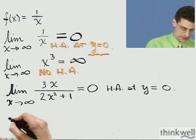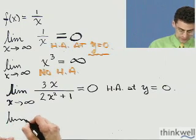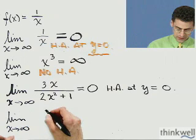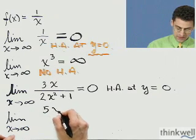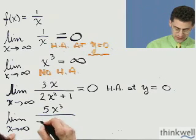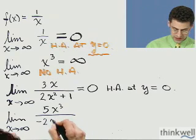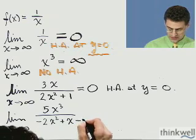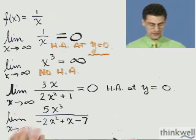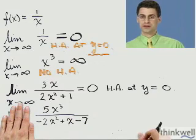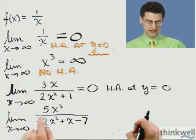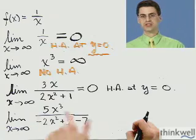Let's try another example: the limit as x approaches infinity of 5x³ divided by negative 2x² + x minus 7. To find horizontal asymptotes, we look only at the highest-degree term on top and the highest-degree term on the bottom, because those leading terms are what drive the growth of the numerator and denominator.